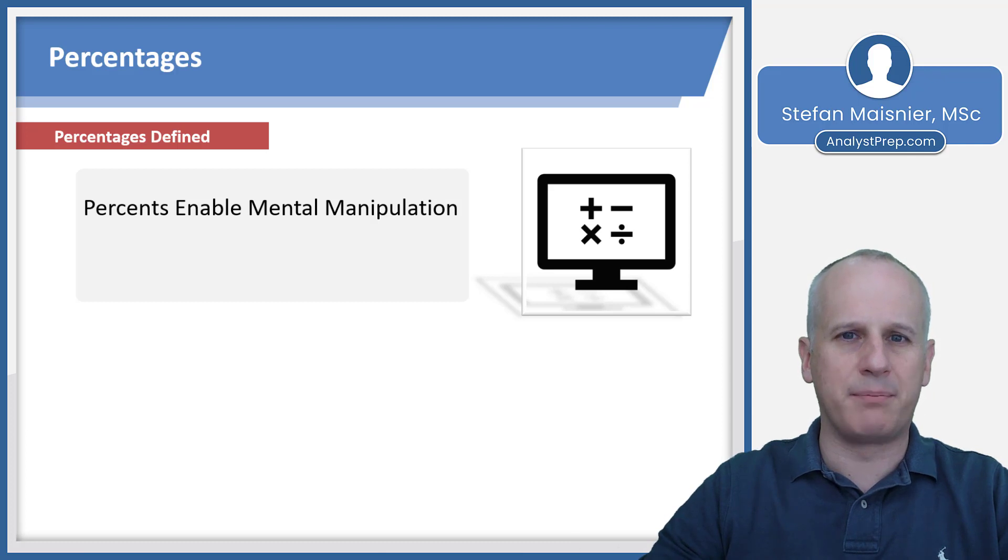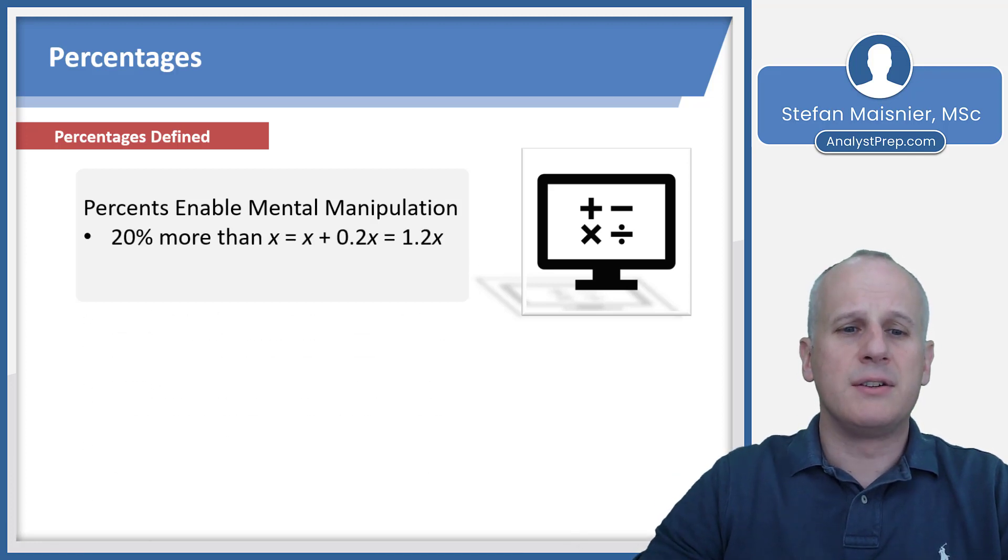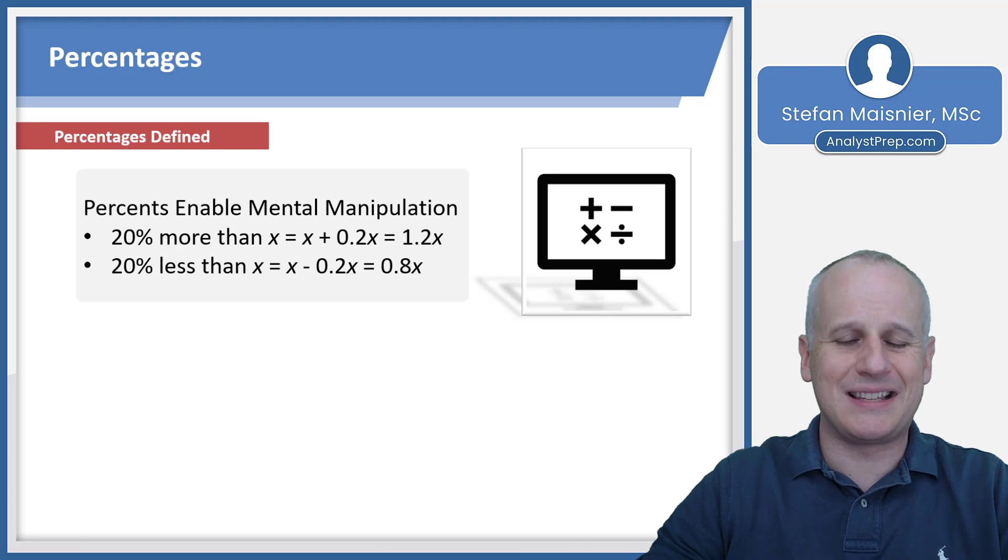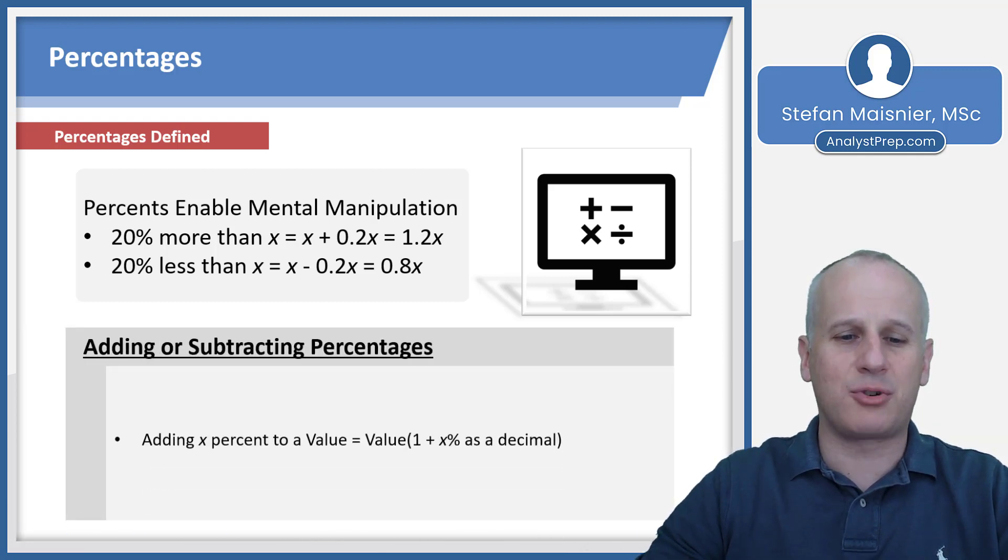Percents ultimately enable easy mental manipulation. We talked earlier about how mental math is defined off of our biology of two hands, five fingers, ten toes, and percentages fit within that paradigm. So you can easily determine what 20% more than x is by knowing that would technically be x plus 0.2x, or simply 1.2x.